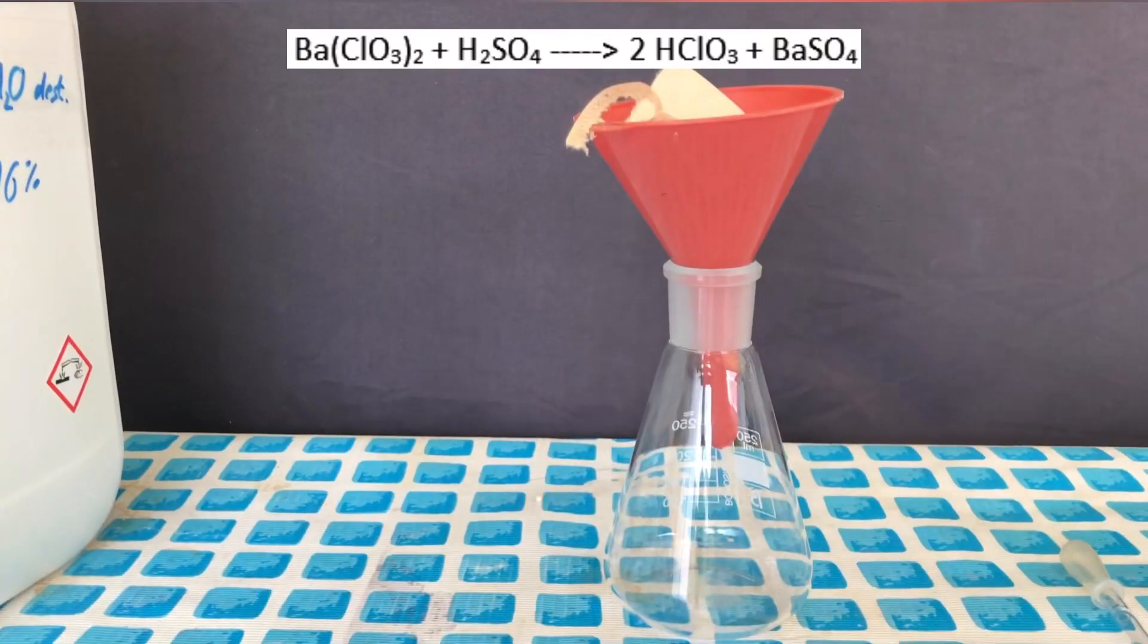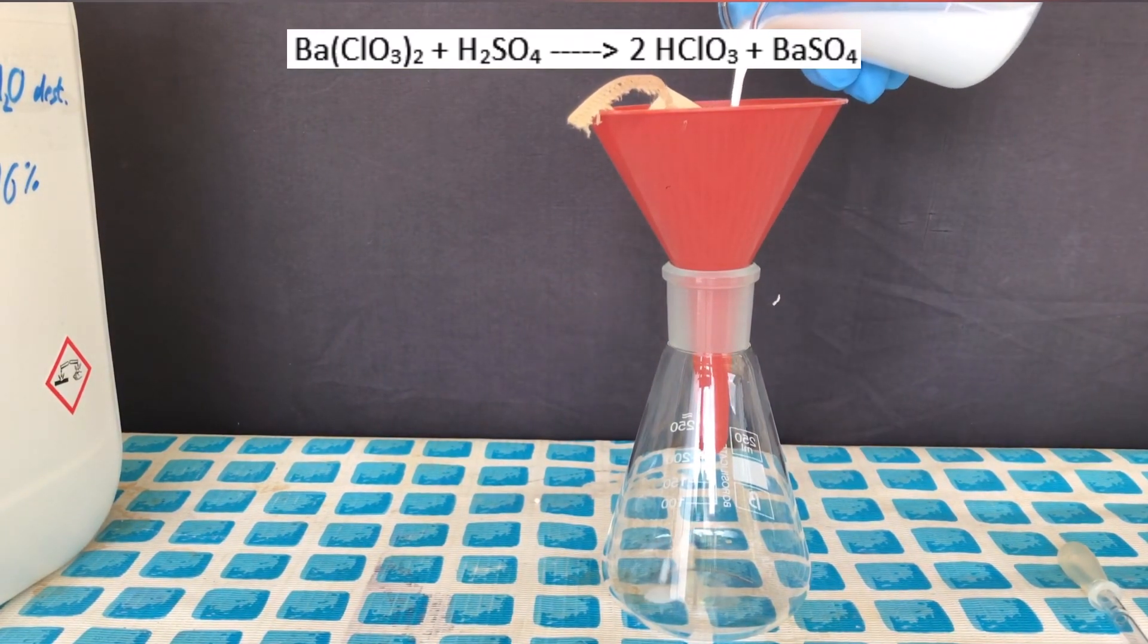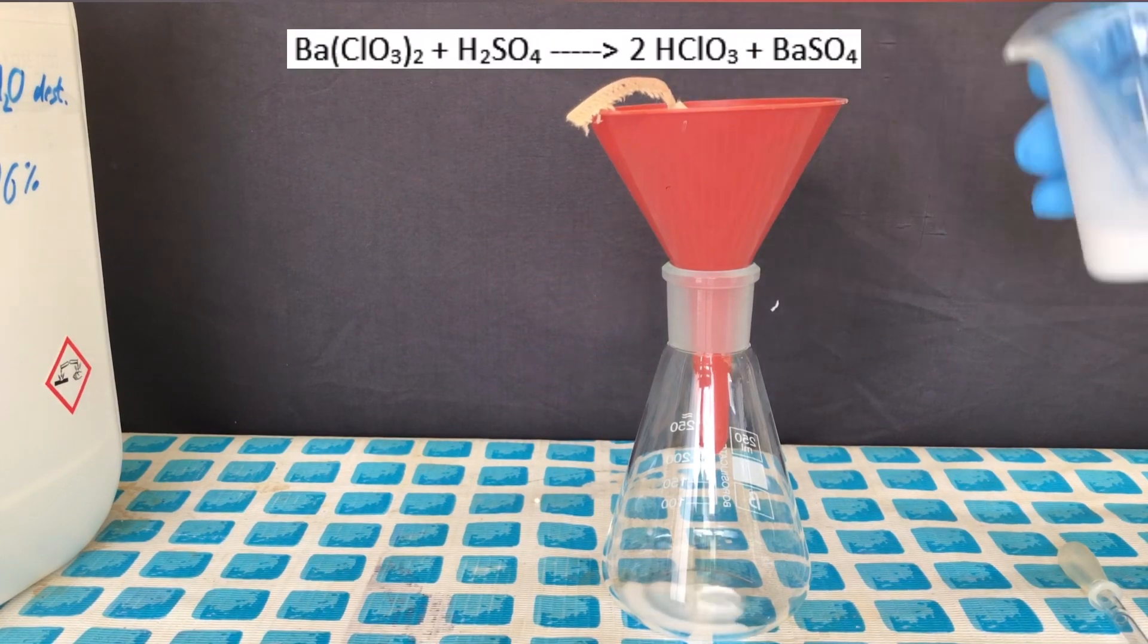The reaction taking place is the following: barium chlorate reacts with sulfuric acid to form barium sulfate, which is insoluble in water and crashes out, and chloric acid.